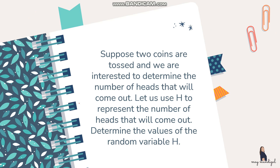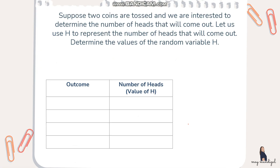Suppose two coins are tossed and we are interested in determining the number of heads that will come out. Let H represent the number of heads. We want to determine the values of random variable H. The experiment is tossing two coins. We will use a table with two columns: outcome and number of heads, which is the value of H.